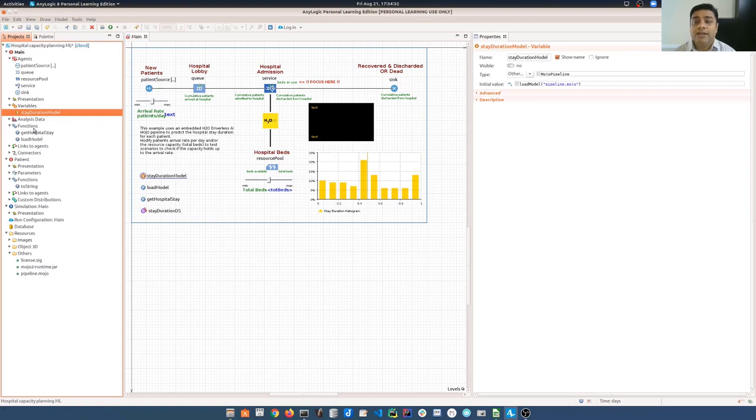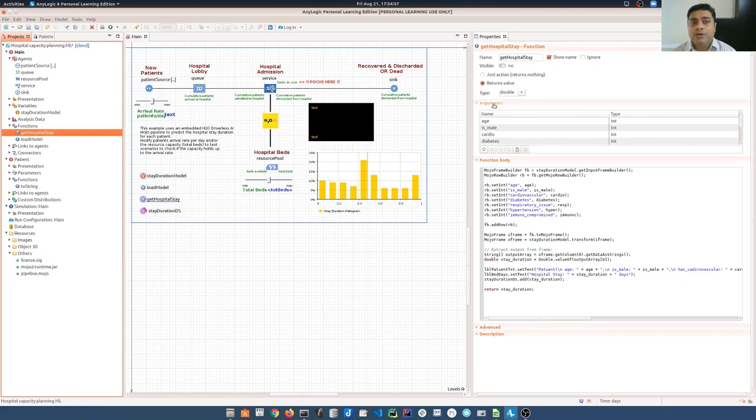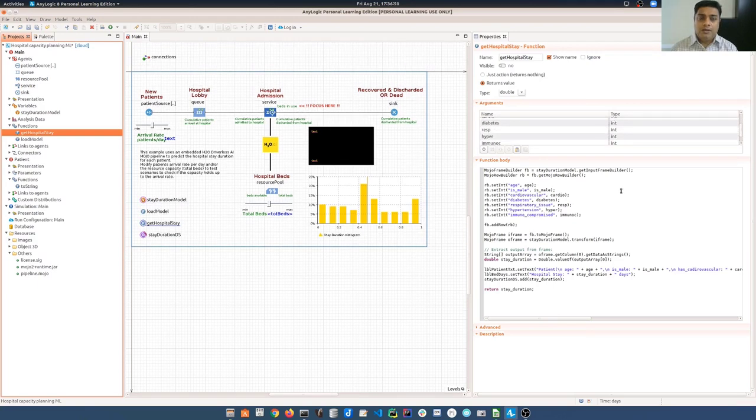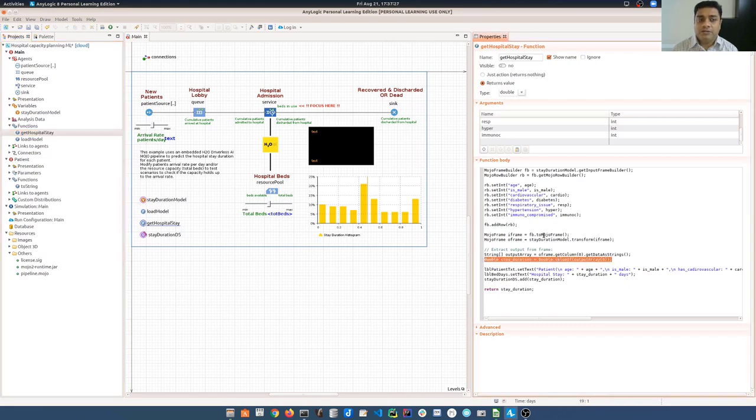With the model now loaded from pipeline.mojo and also instantiated as a variable the stay duration model, we will go ahead and look how it is used for scoring a patient. For that, we create a function called getHospitalStay. The input arguments to this function are similar to what you see as the properties of each patient. Out here, we first create a mojo frame and then create a row within it. We populate the row with all the attributes of the patient which are accepted as arguments to this function. Then we add the row into the frame and finally call the transform function of the model to score the frame. What it would do is it would give you an output using which you can find out what is the stay duration for that particular patient that you passed in.